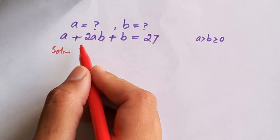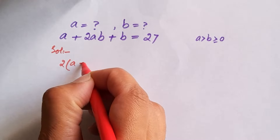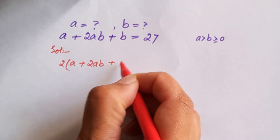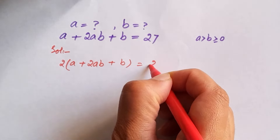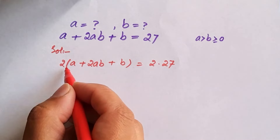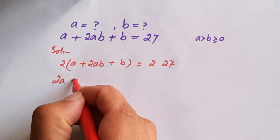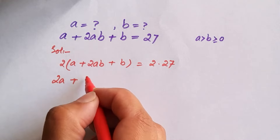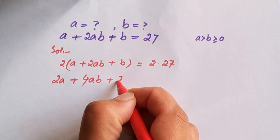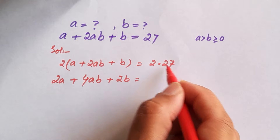We are going to multiply this equation by 2 on both sides, equal to 2 times 27. This 2 is going to be multiplied by each term inside the bracket: 2 times a is 2a, 2 times 2ab is 4ab, plus 2b, is equal to 2 times 27 which is 54.